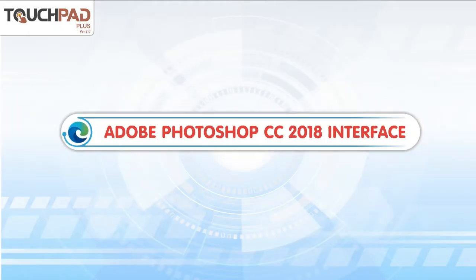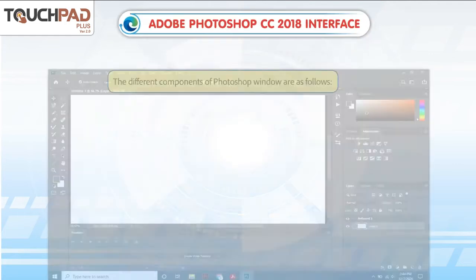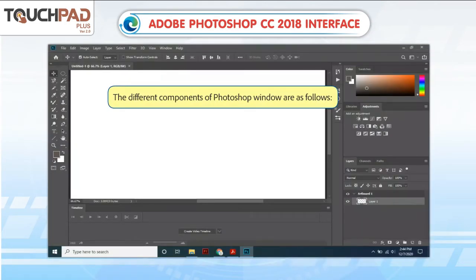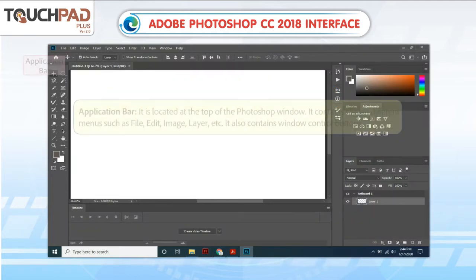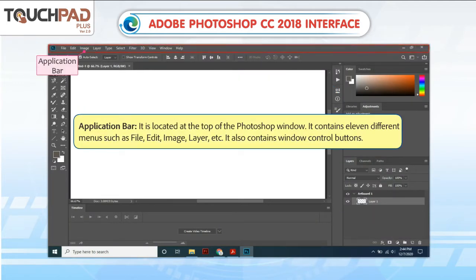Adobe Photoshop CC 2018 Interface. The different components of the Photoshop window are as follows. The Application Bar is located at the top of the Photoshop window. It contains 11 different menus such as File, Edit, Image, Layer, etc. It also contains Window Control Buttons.